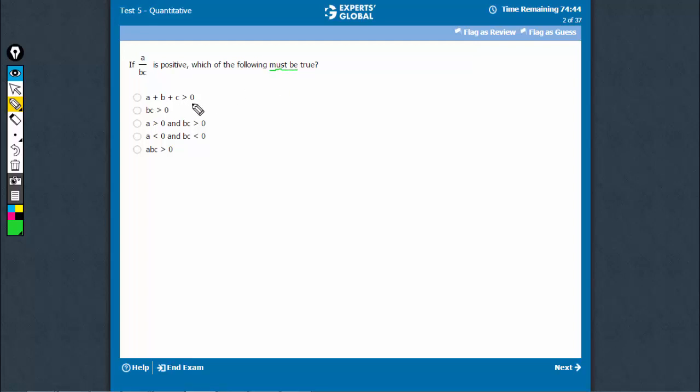The question says what must be true. This is not something that must be true for this to hold. For example, a is equal to minus 10, b is equal to minus 5, and c is equal to 1. This would be something positive, but of course the sum is not positive.